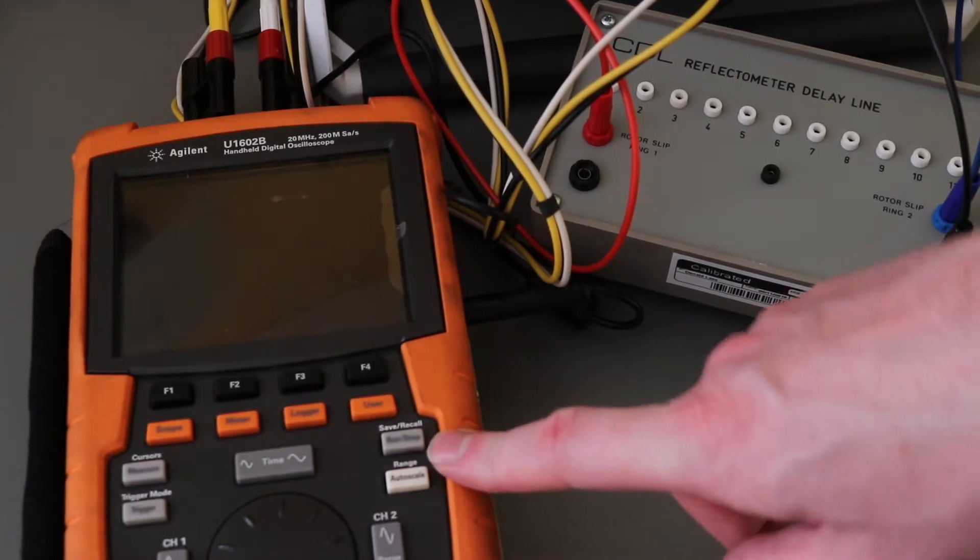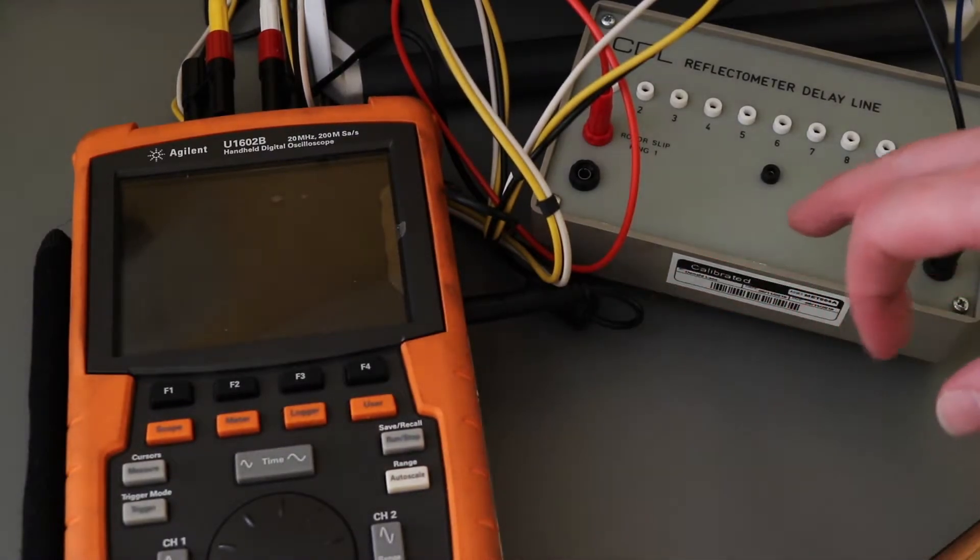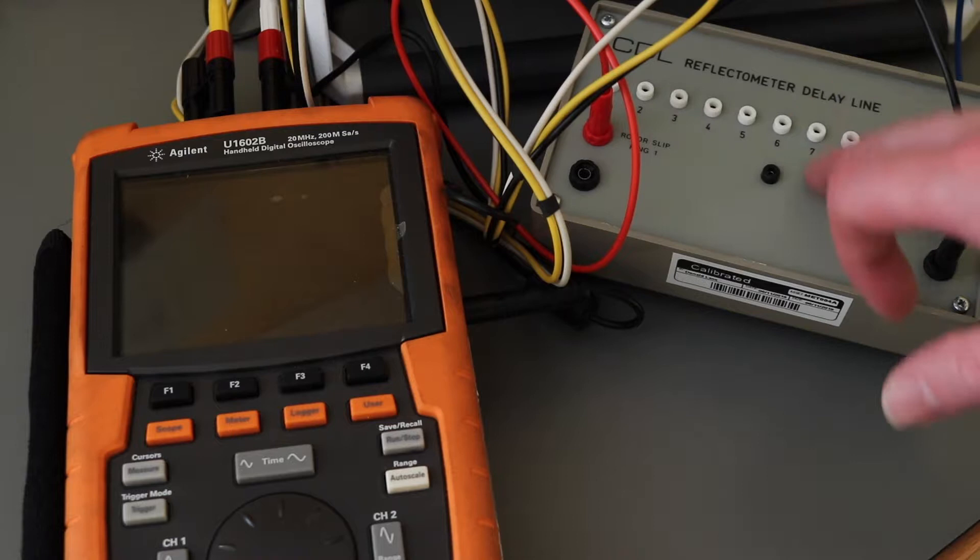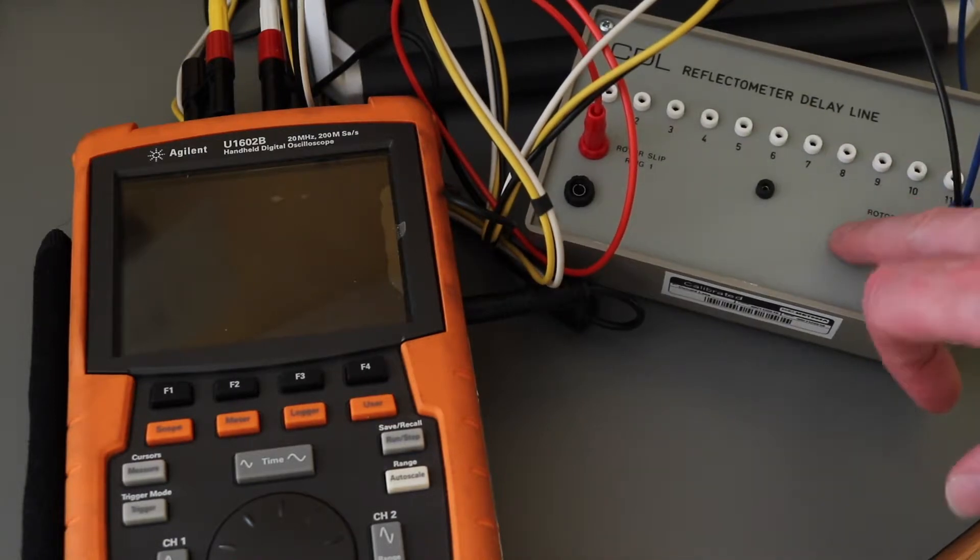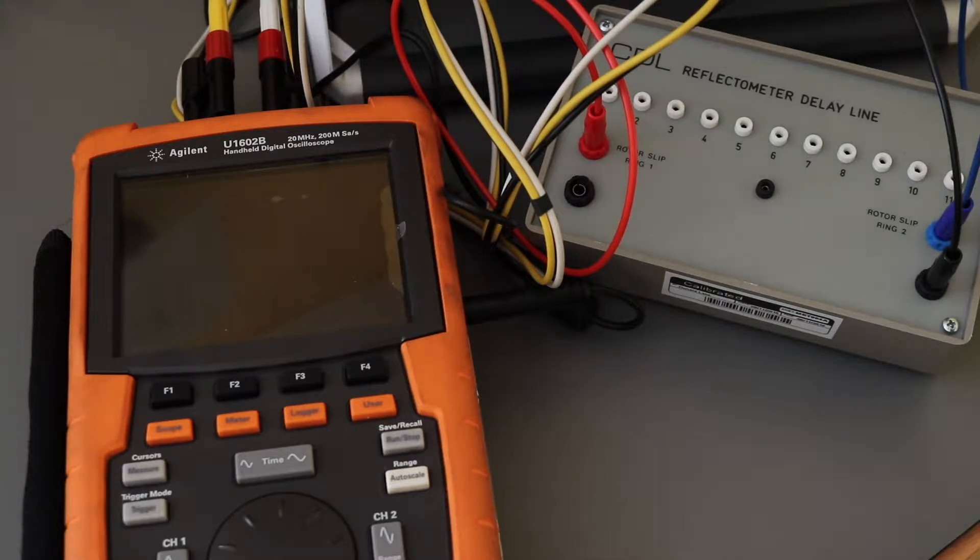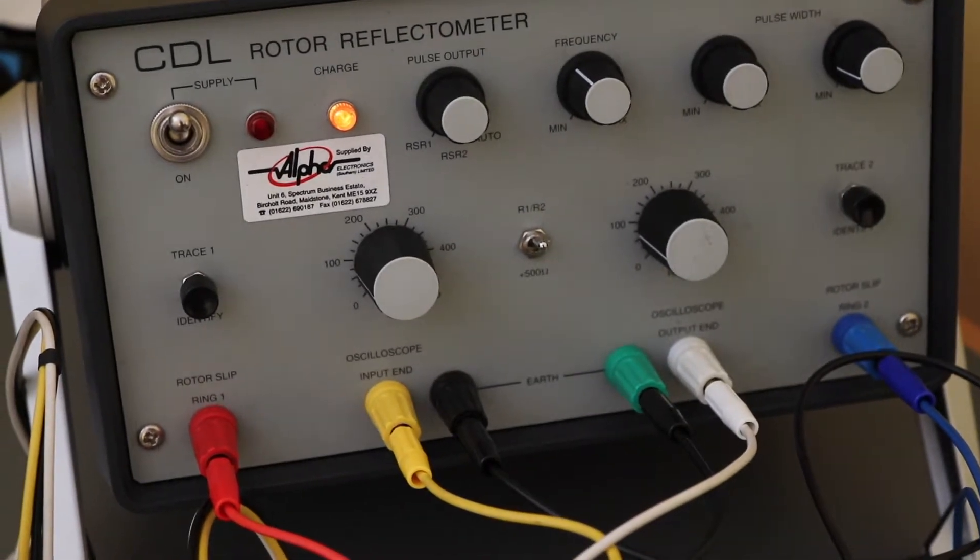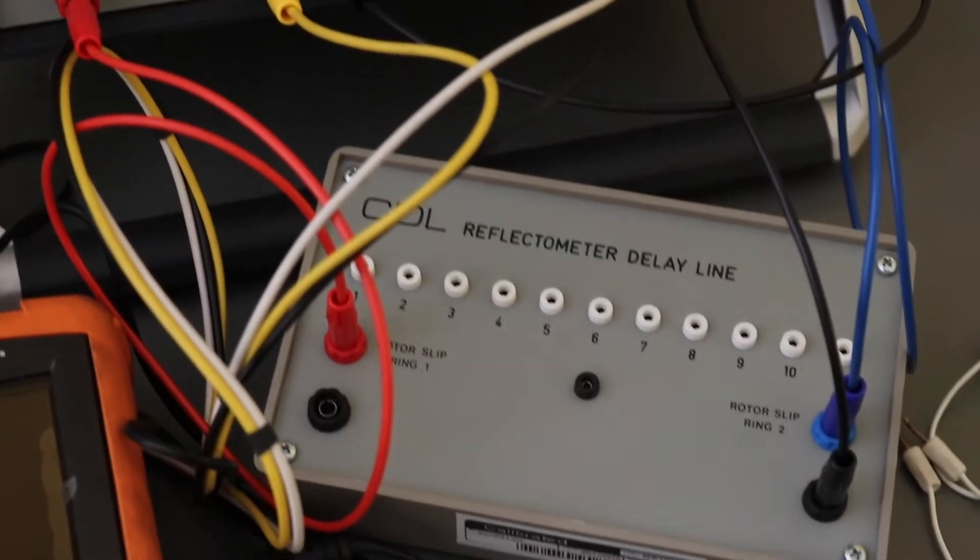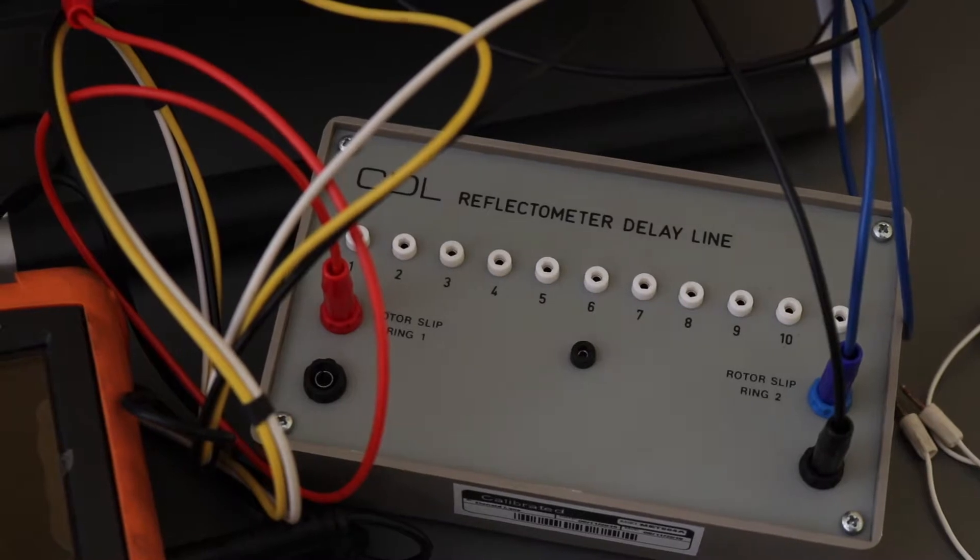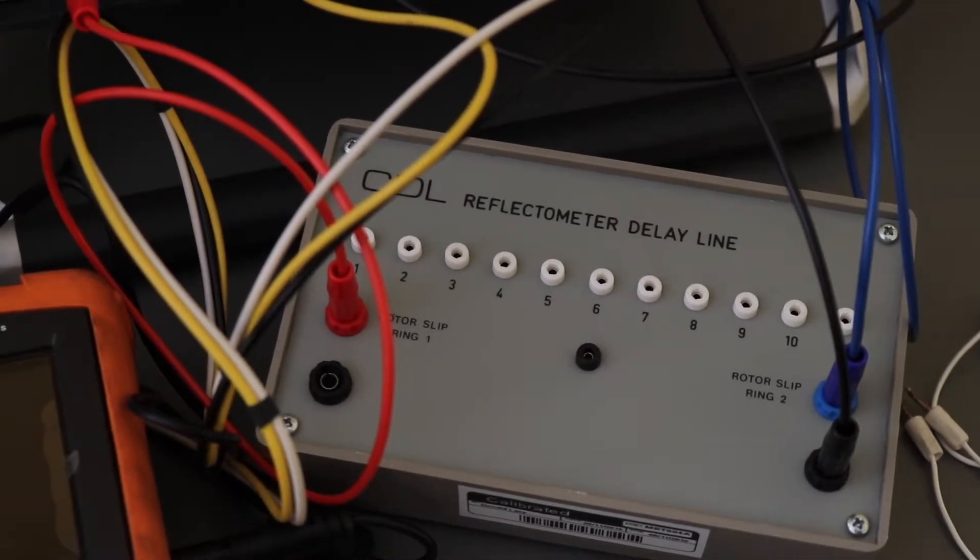Demo of the U1602B DSO. I'm using a rotor reflectometer which is used on generator rotor windings and sends a signal down to see if there's any in-turn faults. There's the rotor reflectometer, that unit there is a little simulator that I'll use to create the signals.